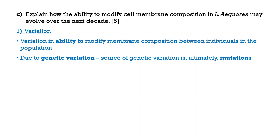Where do we get genetic variation? The ultimate source of genetic variation is mutations. Some of you mentioned meiosis, sexual reproduction, random fusion of gametes — those give rise to genetic variation as well, but only when there are already different alleles. If there's only one allele for a gene, there's no reshuffling of alleles, which is what happens in meiosis. So how do we get different alleles? Mutations. That's why mutations are ultimately the source of genetic variation, after which other processes reshuffle alleles to create even more variation.